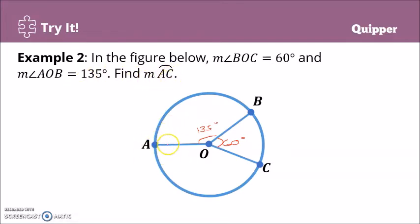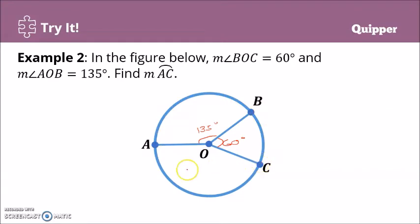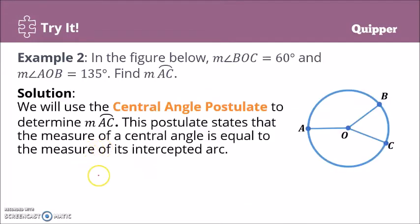We need to find the measure of arc AC — this one right here. It's not the major arc; that would be arc ABC. So arc AC is what we're looking for, and we are going to use the Central Angle Postulate to determine its measure.